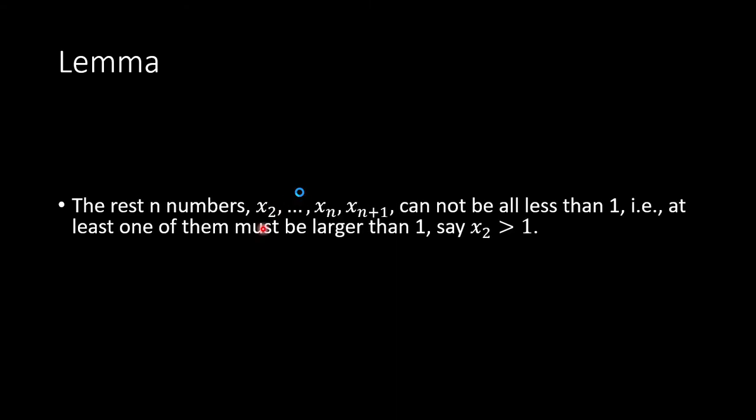Once we set x1 less than 1, then the rest n numbers, x2 to x_n+1, they cannot all be less than 1. Otherwise, the product is less than 1. It's not going to be equal to 1.